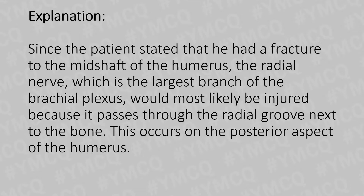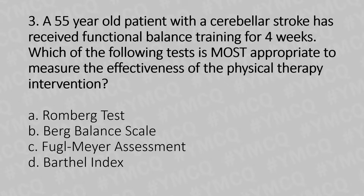Now let's move to our third question. A 55-year-old patient with a cerebral stroke has received functional balance training for four weeks. Which of the following tests is most appropriate to measure the effectiveness of the physical therapy intervention? Option A: Romberg's test. Option B: Burke balance test. Option C: Fugl-Meyer assessment. Option D: Barthel index.